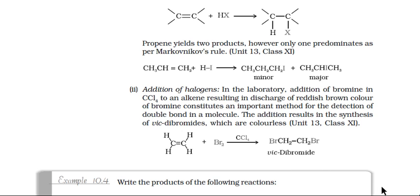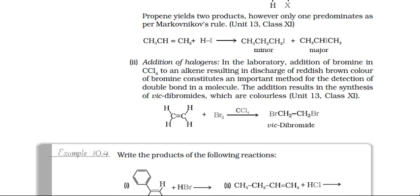If we have a cycloalkene and it is allowed to react with a halogen like bromine in CCl₄ solution, it is an anti-addition. The cycloalkene gives a vicinal dihalo cycloalkane. Since cycloalkene has a planar structure, there are positions above and below the plane. By anti-addition, one bromine on one carbon is upward while the bromine on the other carbon is downward, giving a trans-vicinal dihalide. Refer to Class 11 notes for detailed discussion.